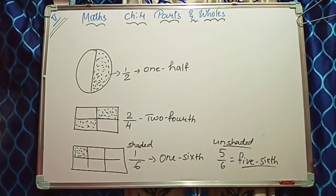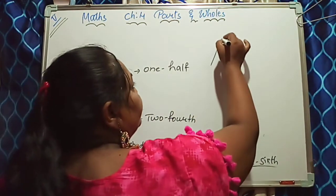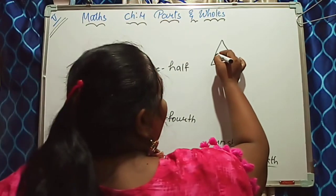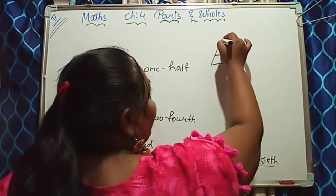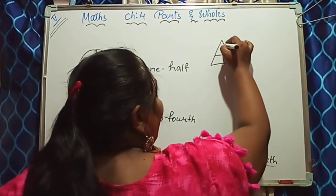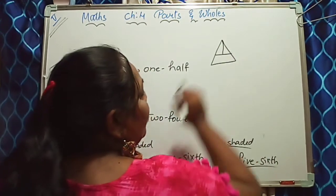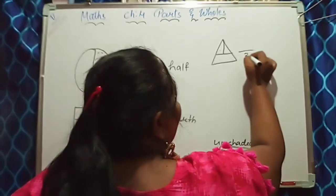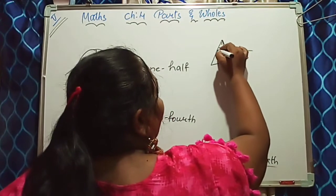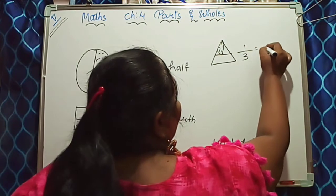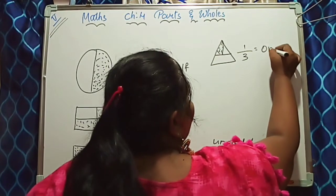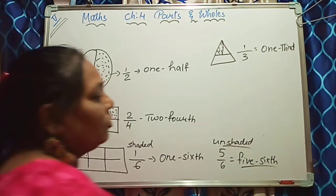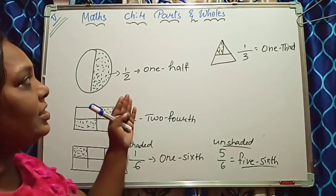This way we will write it. Or if it is a triangle — this is a triangle. I made the half part, and again from here I made another part, giving one, two, three parts. Three parts are there, and here I have shaded one. So one upon three — that is, we write one third.